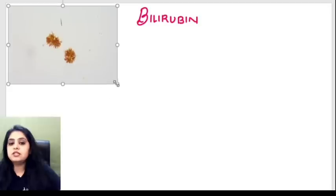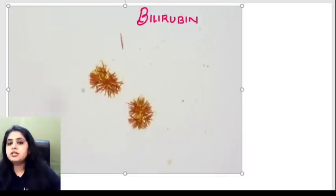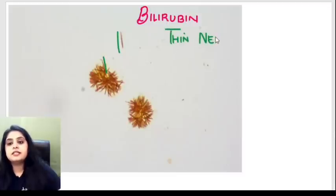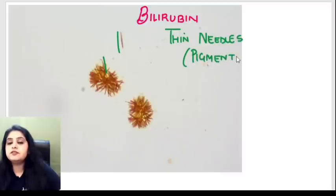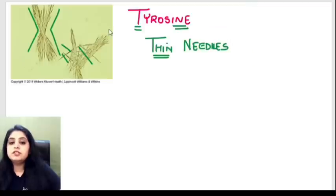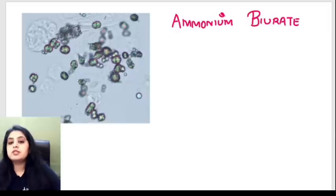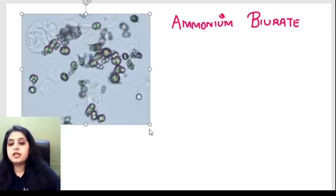The next image shows crystals that also look like a bunch of needles, similar to thin needles, but there's a difference: no stain was applied yet they have a color — they are pigmented. So if you have thin needles that are pigmented, you are dealing with bilirubin. Tyrosine sounds like 'thin' giving unpigmented thin needles; bilirubin also gives thin needles but they will be pigmented.